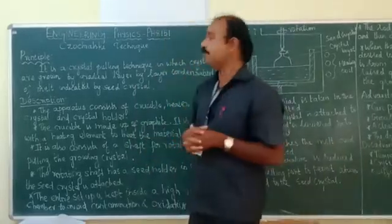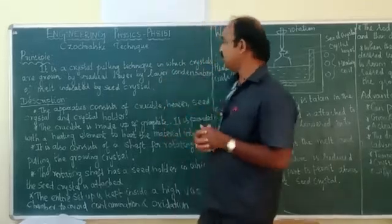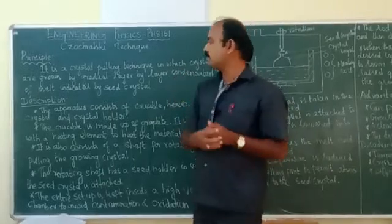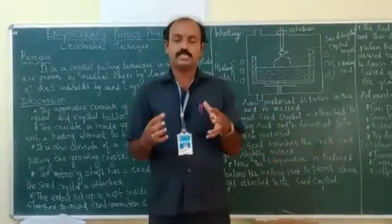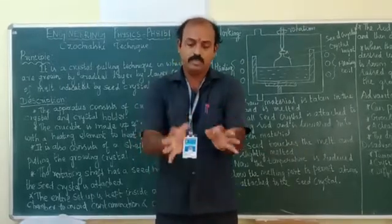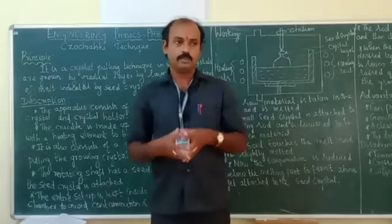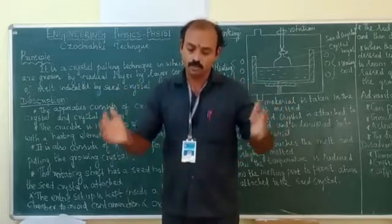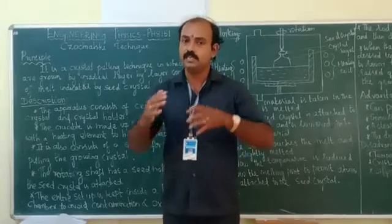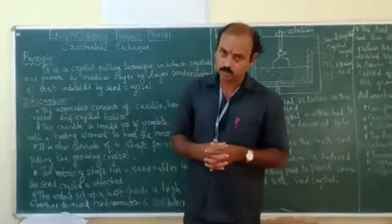In the pulling technique, crystals are grown by gradual layer-by-layer condensation of melt, indicated by a seed crystal. This is a slow process — layer-by-layer crystal growth takes place. In order to get the crystal in a large size, we initially need growth using a seed crystal. The other molten state material comes together to the seed crystal and the size gradually increases, until at last our expected size crystal is grown.